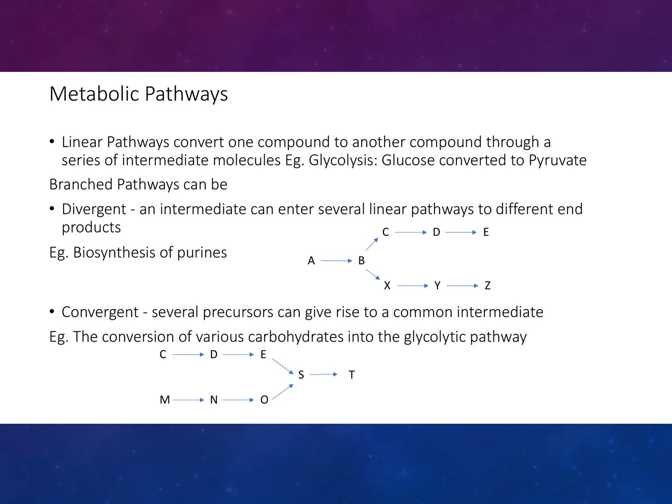Linear pathways convert one compound to another compound through a series of intermediate molecules — for example, glycolysis converts glucose to pyruvate. Branch pathways can be divergent, where an intermediate can enter several linear pathways to different end products, for example the biosynthesis of purines such as adenine and guanine.